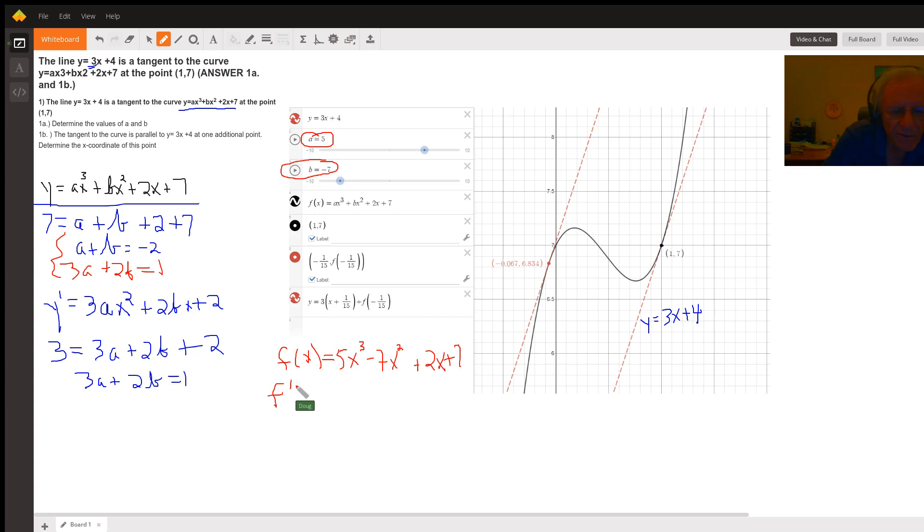F prime will be 15x squared minus 14x plus 2. And to answer part b, we want to know when does this formula for the slopes of tangent lines, when does that give us a value of 3? So we're actually solving this equation: 15x squared minus 14x plus 2. When does that give us a value of 3?